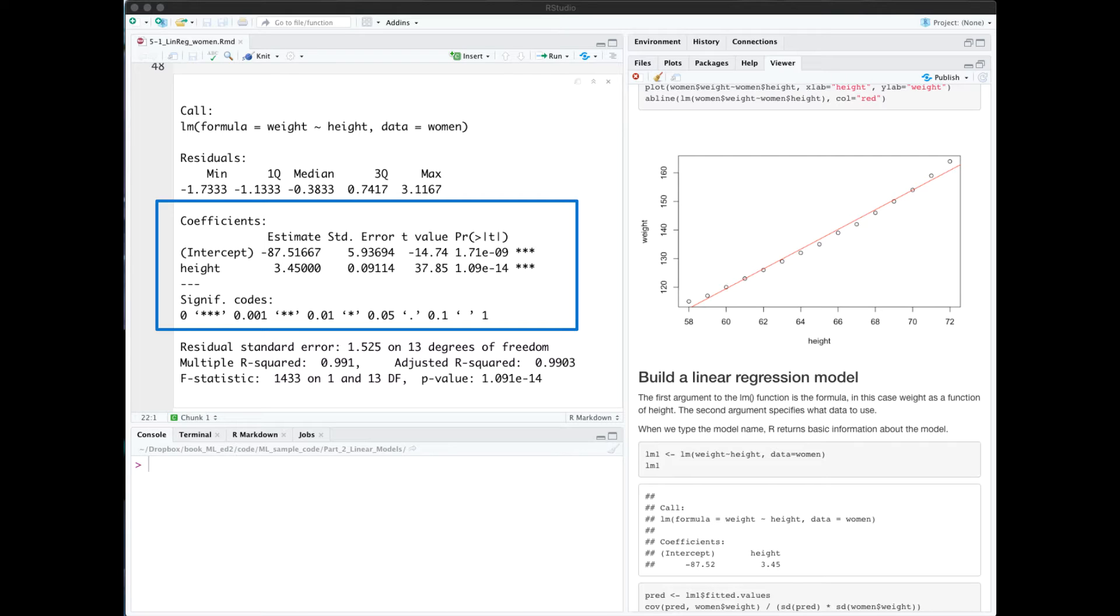So 0 would mean that there's no relationship between the predictor and the target. That's like the null hypothesis. I don't usually look at the t-values, I look at the p-values.